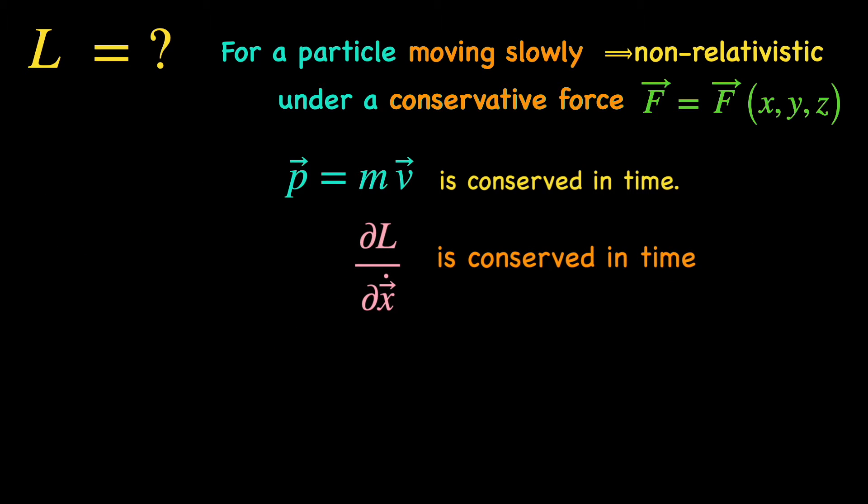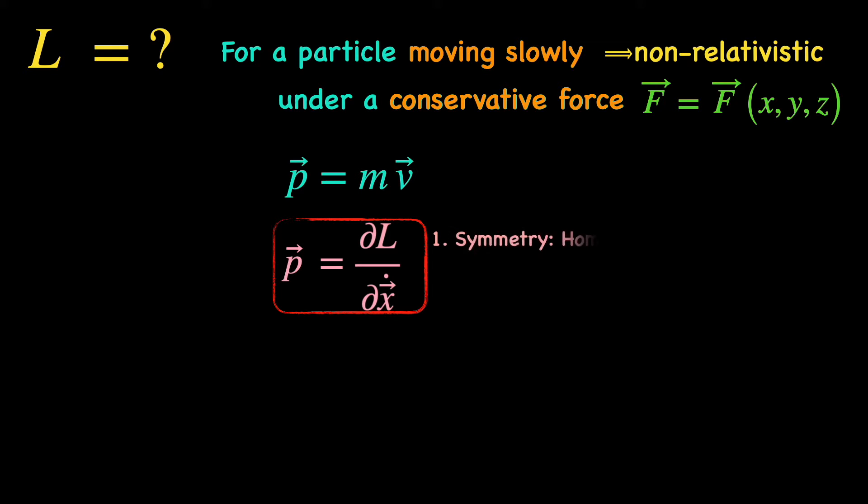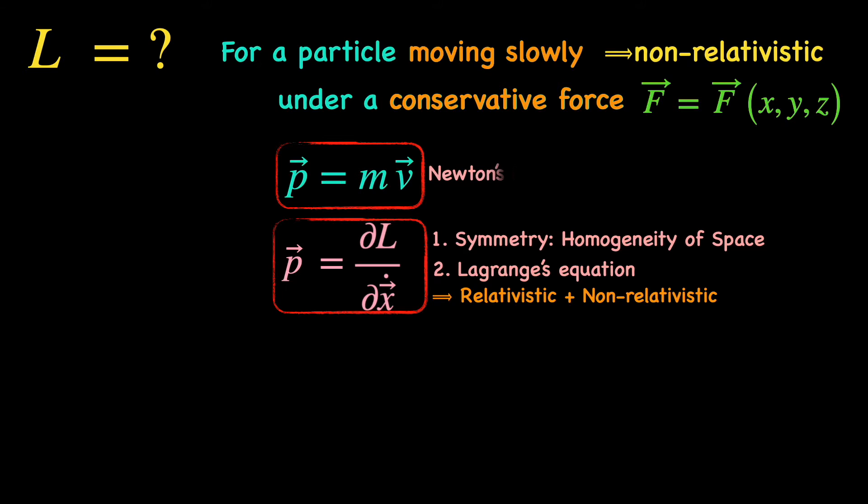So, it must be the definition of momentum in terms of the Lagrangian. Since this definition comes from the symmetry of spatial homogeneity and the general form of the Lagrangian equation, it applies to both relativistic and non-relativistic scenarios. On the other hand, the momentum defined as mass times velocity came from Newton's second law, which we have always used for low velocity or non-relativistic particles.